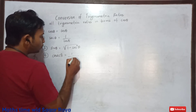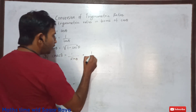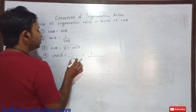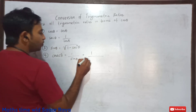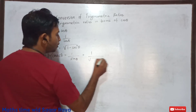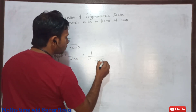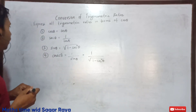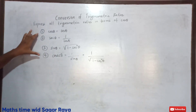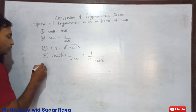So cosec theta can be written as 1 by sin theta, and 1 by sin theta we may write as 1 over root under 1 minus cos squared theta. So I have now expressed four trigonometric ratios.